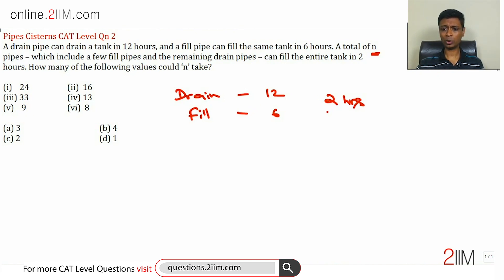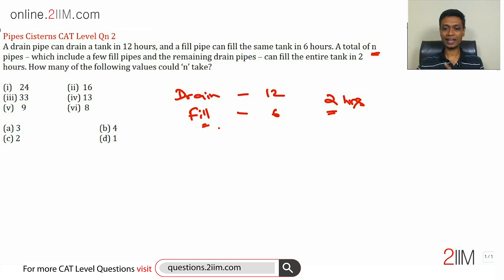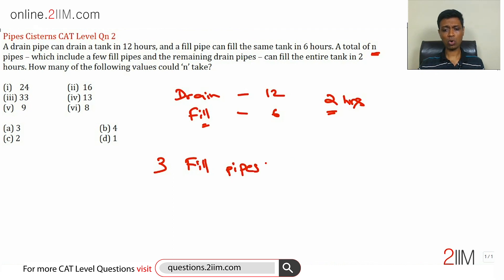I think about this in two parts: first, filling the tank with just fill pipes. One fill pipe can fill in six hours, so to fill it in two hours we'll need three fill pipes. So if you had three fill pipes and no drain pipes, our objective has been achieved — n could be three.